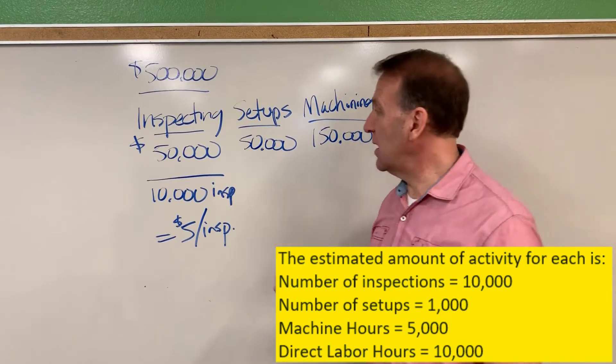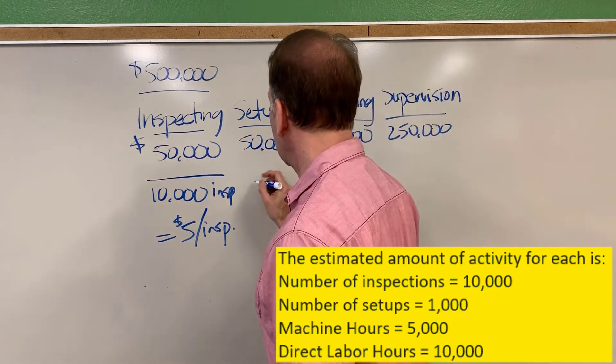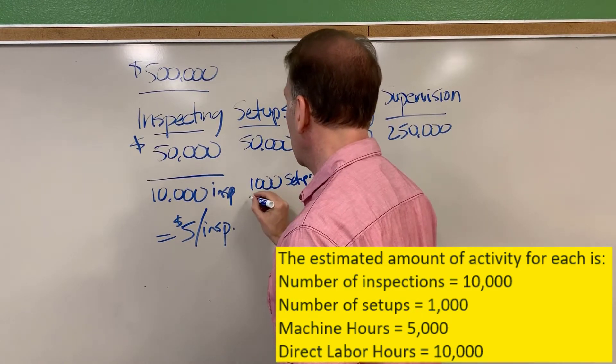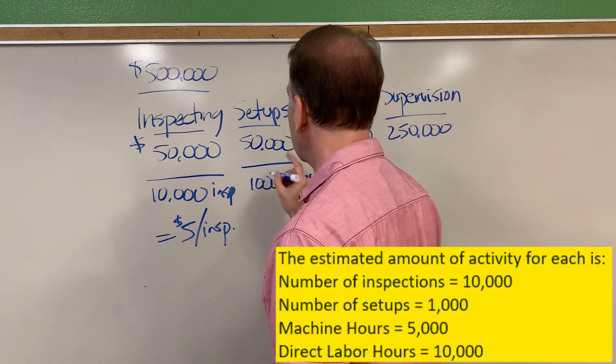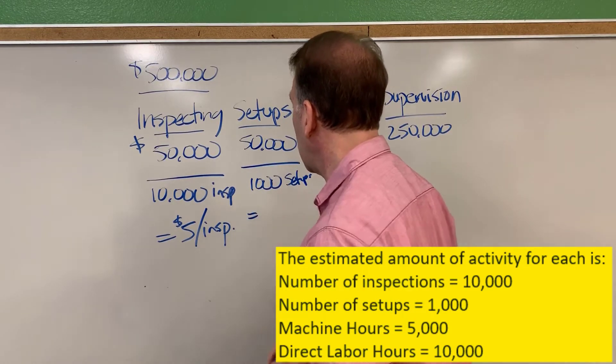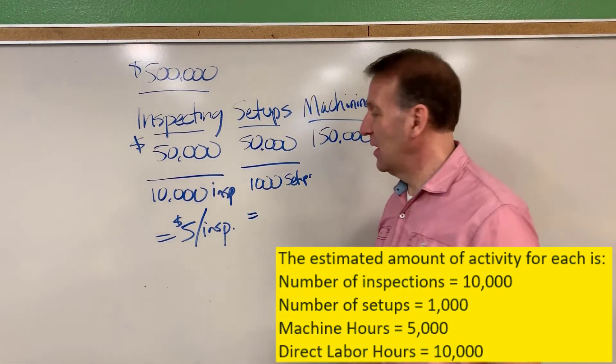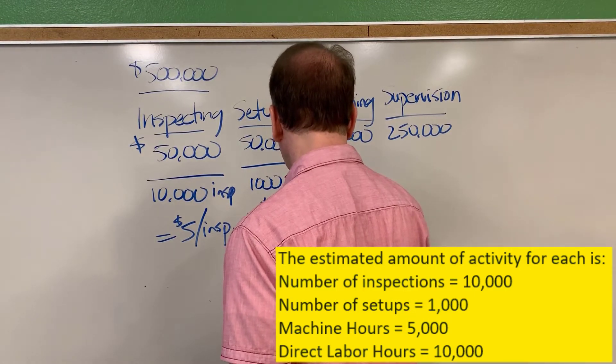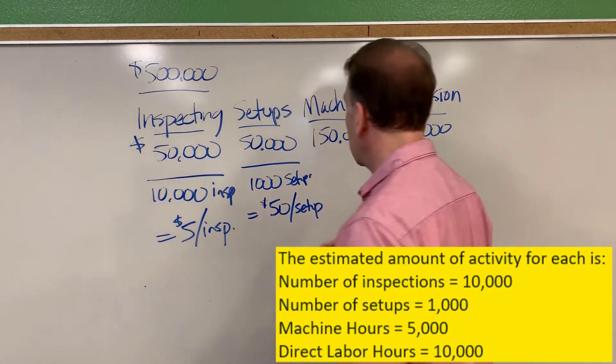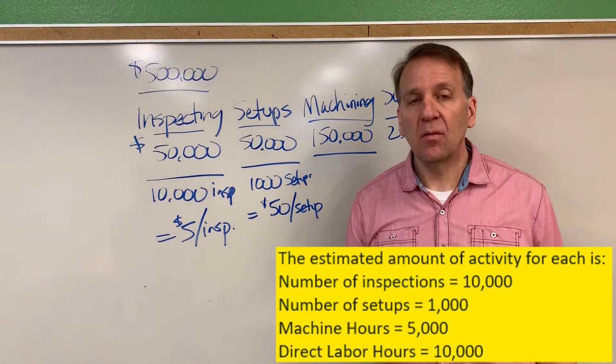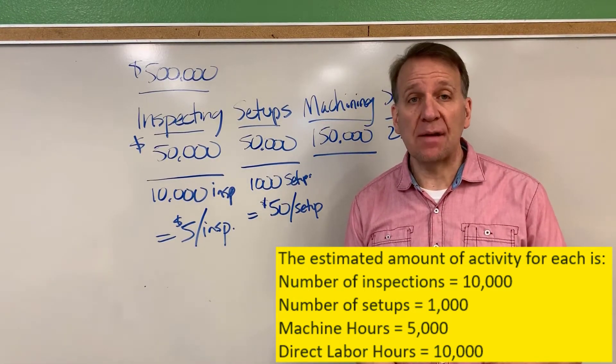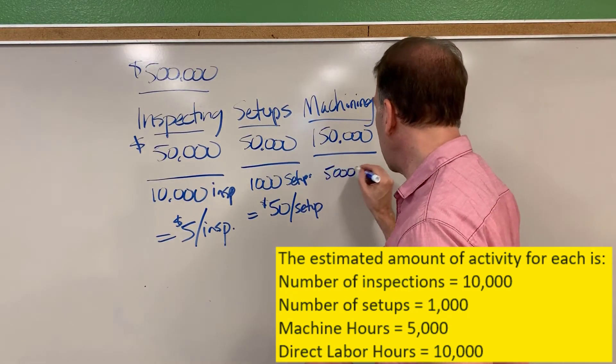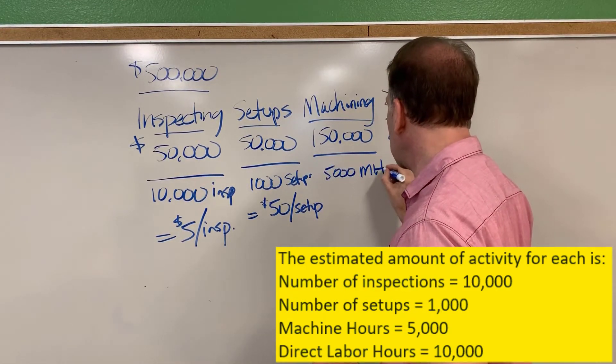Now the next one is setups. And let's say there are 1,000 setups. So now I divide the 50,000 by the 1,000 setups, and that gets me $50 per setup. Next, I'm going to take the machining. And this is being allocated based off of machine hours. So I'm going to divide this by 5,000 machine hours.